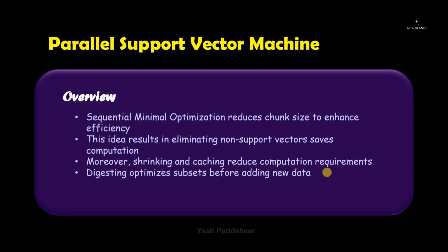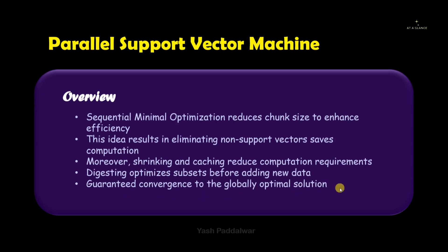By implementing shrinking and caching techniques, the computation requirements for SVM training are significantly reduced, making it more efficient. When the divided chunks are combined again, a method called digesting is used. Digesting in SVM optimization involves prioritizing the optimization of subsets — the subsets are optimized first before new data is added. This improves convergence and increases training efficiency, guaranteeing the model converges to a globally optimal solution with very few computational resources.